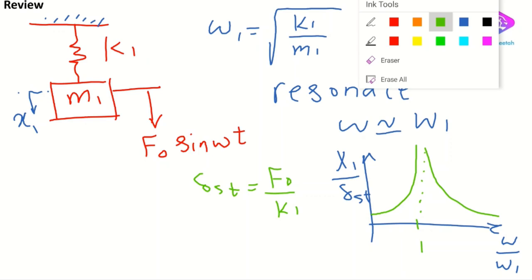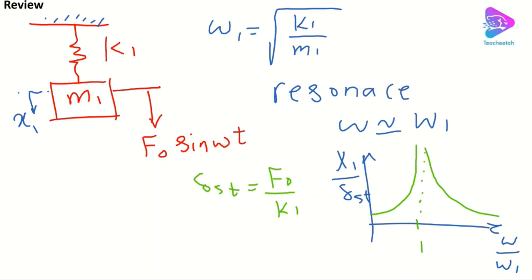We want to avoid resonance behavior in the case where our system has a force with ω equal to or near ω₁. If the force applied to the system has a frequency near the natural frequency, we get a very high amplitude. We want to get away from that resonance condition by adding a simple component to the system.